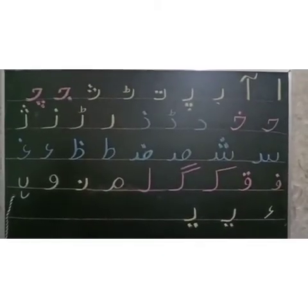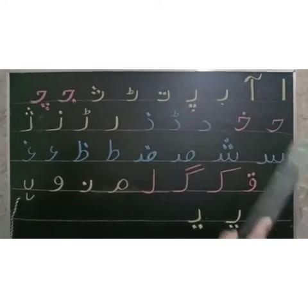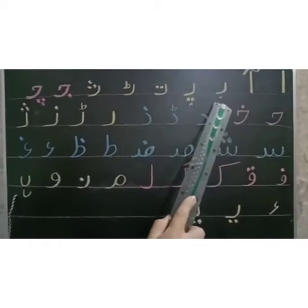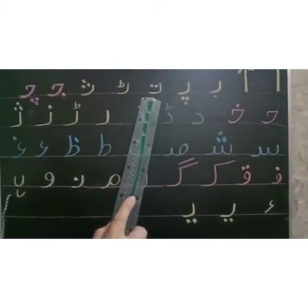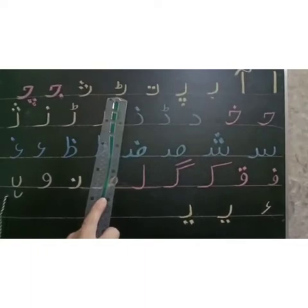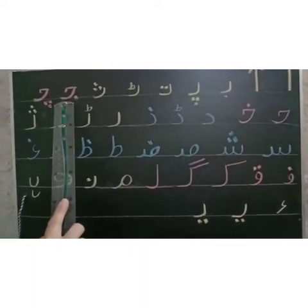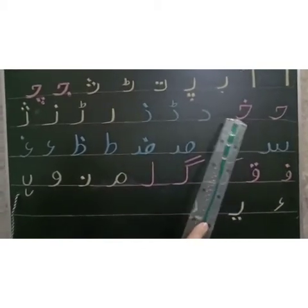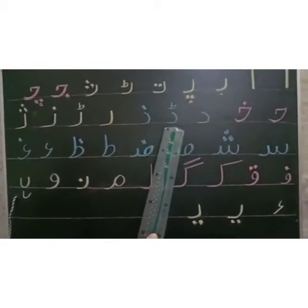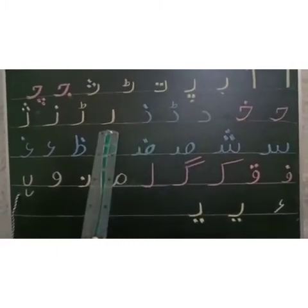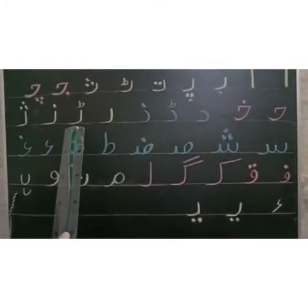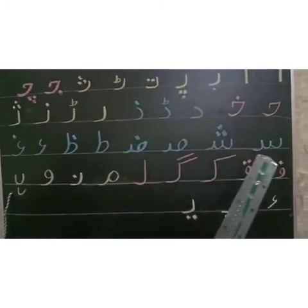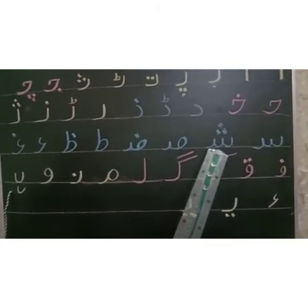آئیے اب ہم حروفِ تہجی کو ان کی آوازوں کے ساتھ پڑھتے ہیں: Alif A, Alif Mad A, Be B, Pe P, Te T, Te T, Se S, Jim J, Che Ch, He H, Khe Kh, Dal D, Dal D, Zal Z, Re R, Alil L, Ze Z, Ye, Yu, Siin S.